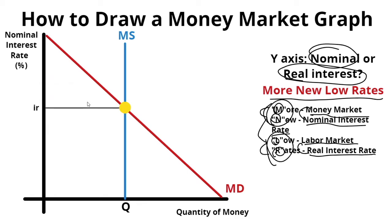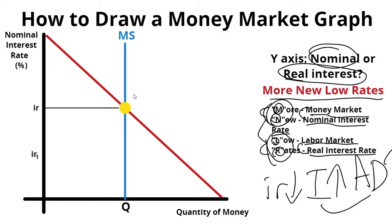That's essentially how you draw a money market graph to earn full points. But just knowing how to draw it won't make you fully prepared for the test — you also need to know how to draw it shifting. So let's try a quick question: what will happen if the central bank uses expansionary monetary policy? How will it shift the graph or interest rates?